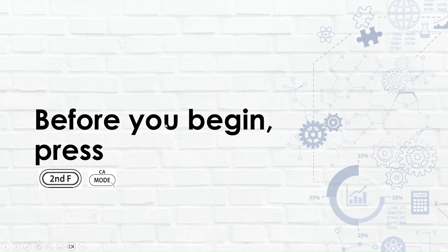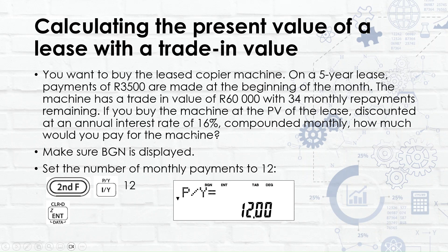Press second function and mode to clear. Next example: calculating the present value of a lease with a trade-in value. You have a leased copier machine on a five-year lease with payments of 3,500 rand made at the beginning of the month, a trade-in value of 60,000 rand, and 34 monthly repayments remaining.